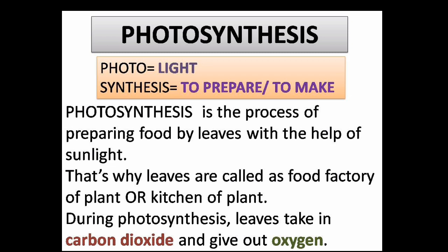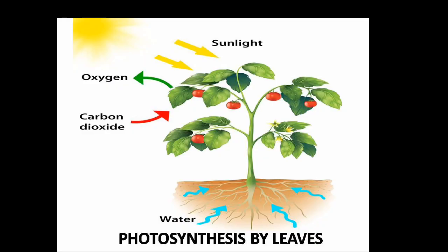Photosynthesis is the process of preparing food by leaves with the help of sunlight. That is why leaves are called the food factory or kitchen of the plant. During photosynthesis, leaves take in carbon dioxide and give out oxygen for us to breathe. The main product obtained from photosynthesis is carbohydrate. Thank you, have a nice day.